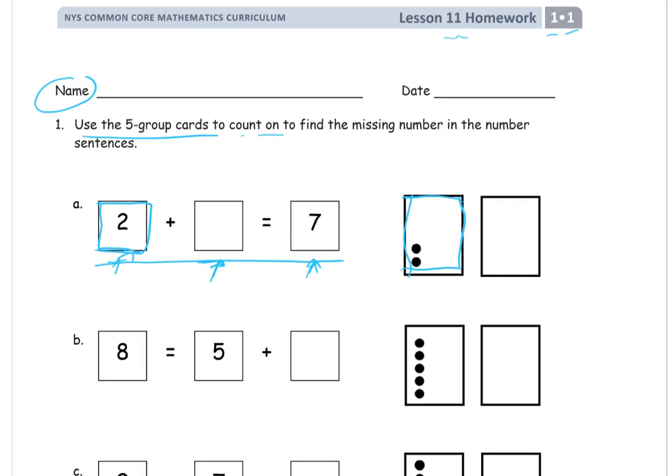So one card would have a two. It would have a two on one side, like this one here. And then it'll have two dots on the other side of the card. So let me draw what this is.